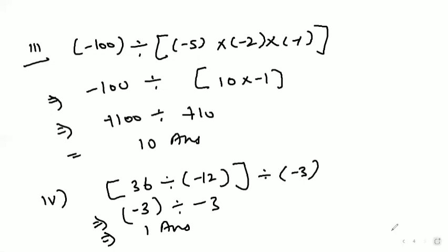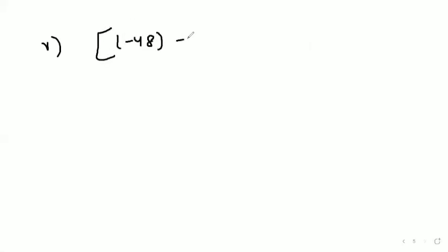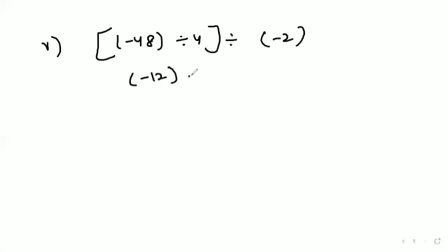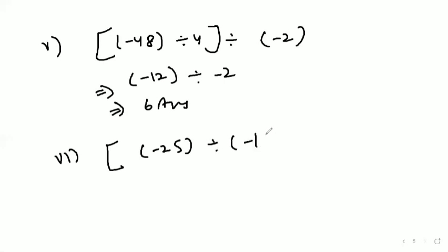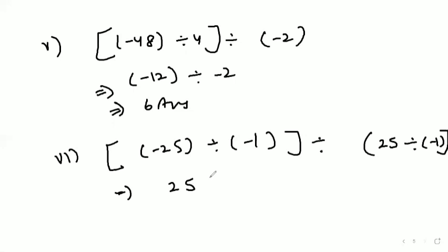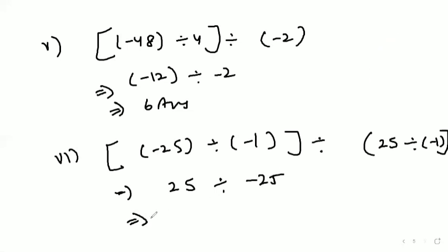Fifth part: (minus 48 divided by 4) whole divided by minus 2. We solve the bracket first — minus 48 divided by 4 gives minus 12. Then minus 12 divided by minus 2 — minus and minus cancel — gives 6. Sixth part: (minus 25 divided by minus 1) whole divided by (25 divided by minus 1). Bracket: minus 25 divided by minus 1 gives positive 25. Then 25 divided by minus 1 gives minus 25. So 25 divided by minus 25 gives minus 1.